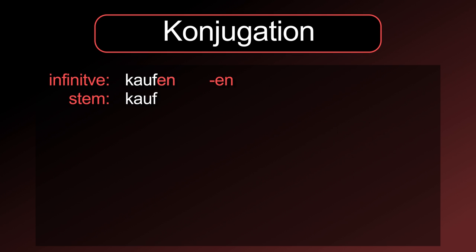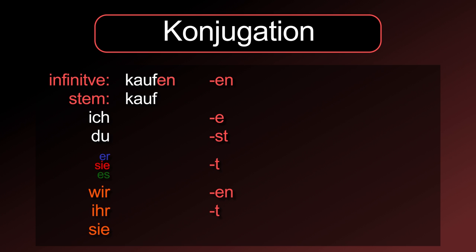When it comes to the conjugation, most verbs have a typical pattern of verb endings that you have to remember. The endings are as followed: ich → -e, du → -st, er/sie/es → -t, wir → -en, ihr → -t, sie → -en.